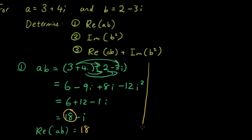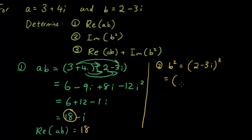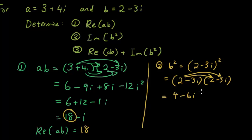Number 2: b is equal to 2 minus 3i. So b squared is equal to (2 minus 3i) squared. I'm just going to square it by writing it out in full. I know that you geniuses out there have a quicker way of doing it, but this tutorial is for everyone. So 2 times 2 is 4; 2 times negative 3i is negative 6i; negative 3i times 2 is negative 6i again; negative 3i times negative 3i is plus 9i squared.